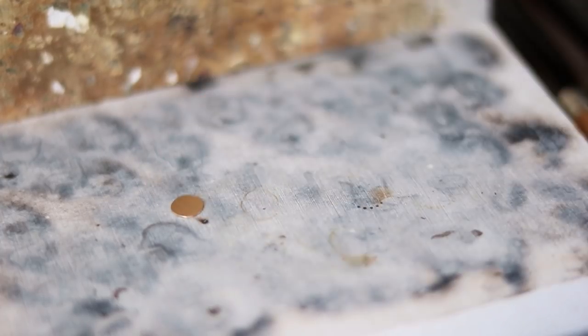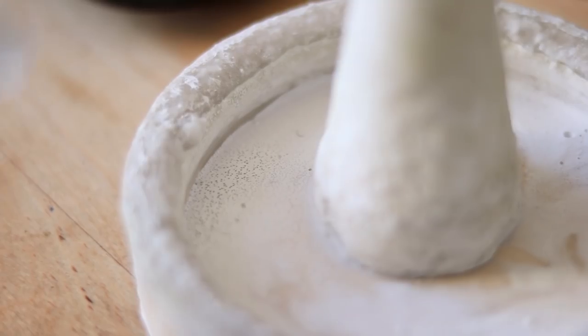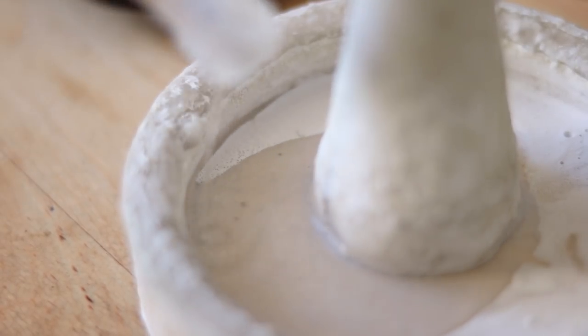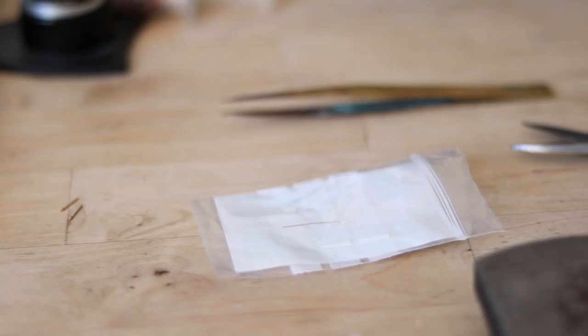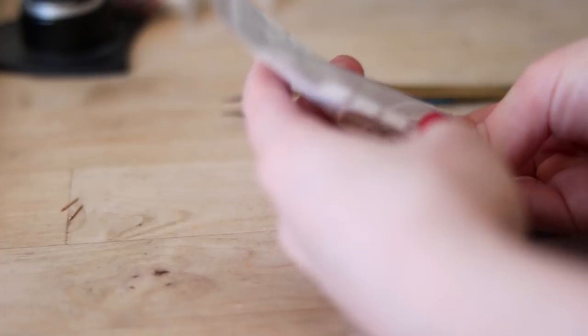Now it's time to solder. Soldering gold-filled metal is slightly different than silver and you'll see that in a second. I am using solid gold solder. I buy it at Cookson Gold.